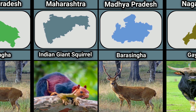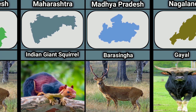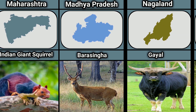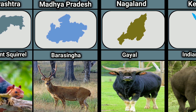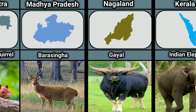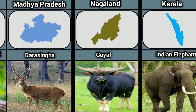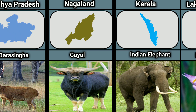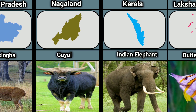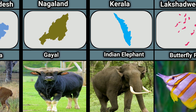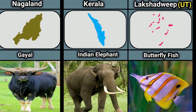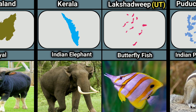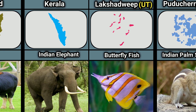Kerala — Indian Elephant. Lakshadweep — Butterfly Fish and Indian Palm Squirrel.